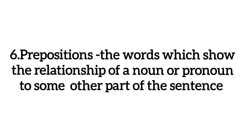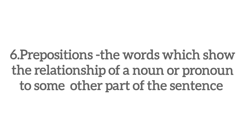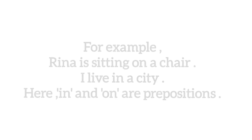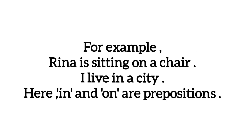और next, number six है prepositions. Prepositions क्या होती हैं? The words which show the relationship of a noun or pronoun to some other part of the sentence — जो हमें relationship बताती हैं. For example: Rina is sitting on a chair. I live in a city. तो यहाँ पर 'in' and 'on' जो हैं वो prepositions हैं, क्योंकि यह हमें relation बता रही हैं.